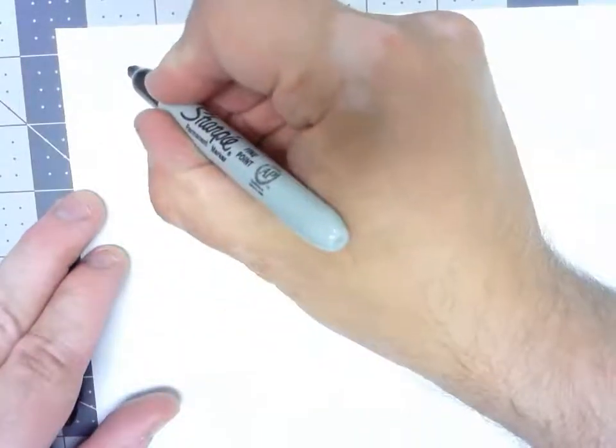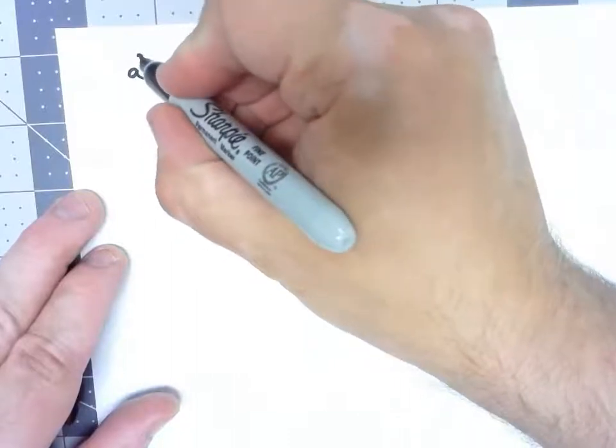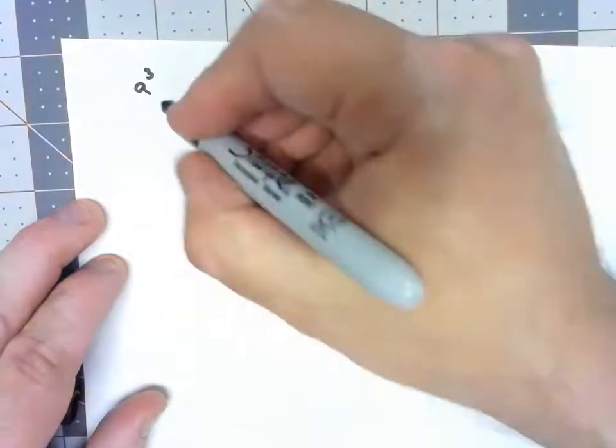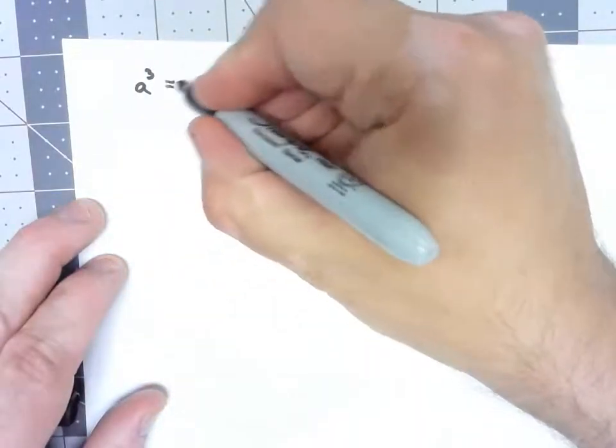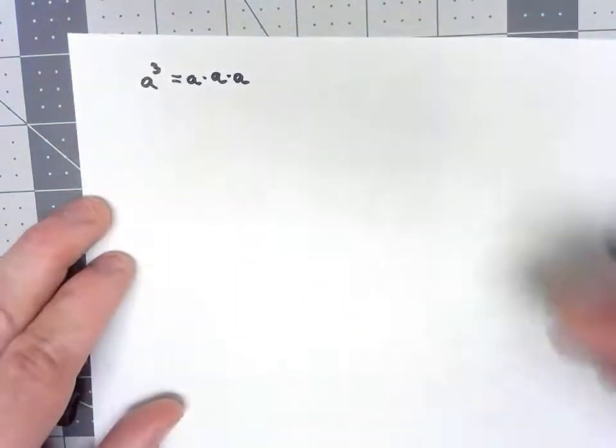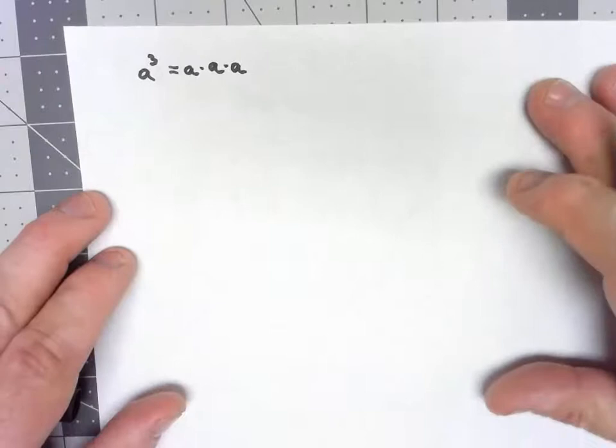Before getting into our final couple of definitions, I want to take a look at a fairly simple idea that's going to come up regularly throughout the course. It's pretty simple. If I say something like a cubed in regards to a group, it means pretty much what you would expect. Whatever my group operation, I do it three times. So a cubed means a times a times a, just like normal algebra.